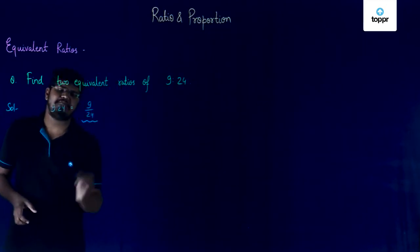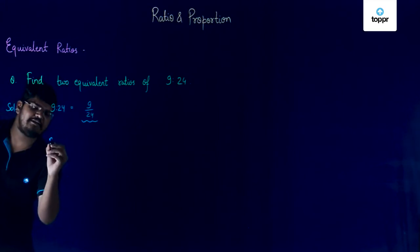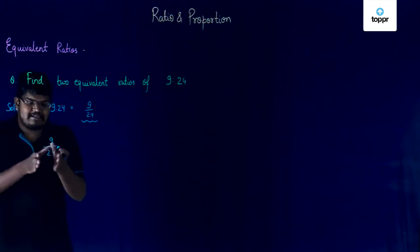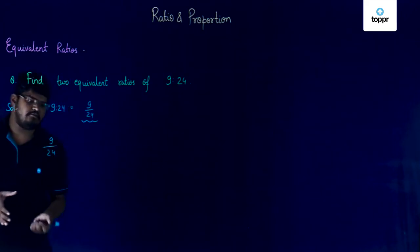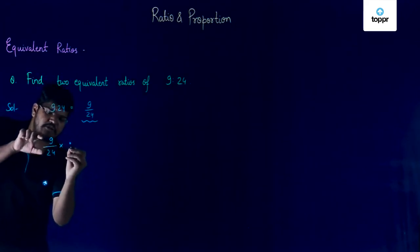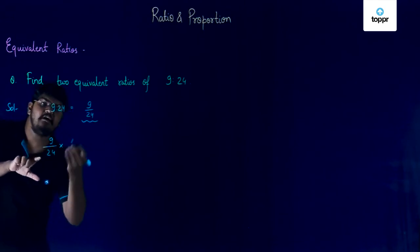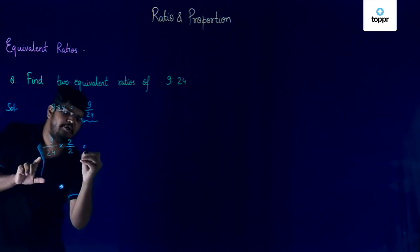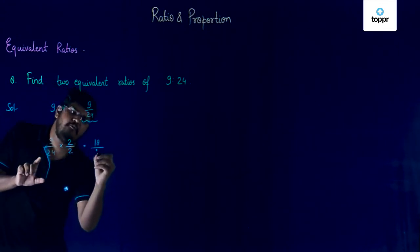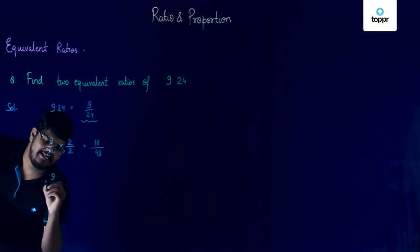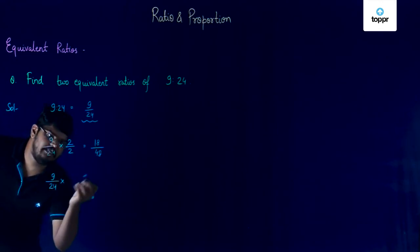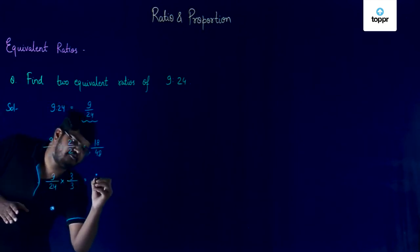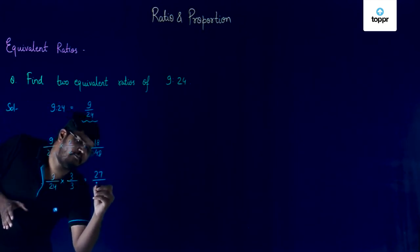I have the fraction as 9 by 24, and if I want to convert this into some other number and still remain equivalent to 9 by 24, I will simply multiply both numerator and denominator with the same number. If I multiply 9 by 24 with 2 by 2, I'm going to get 18 upon 48. If I multiply 9 by 24 with 3 by 3, then 9 into 3 upon 24 into 3 gives us 27 upon 72.